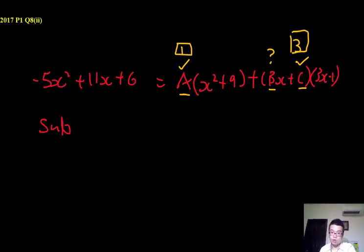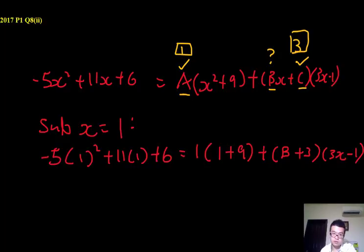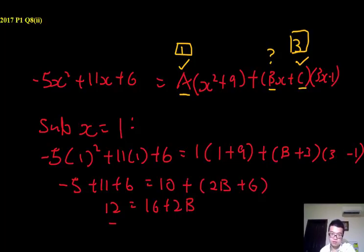Earlier we used x equals 1 over 3, and we used x equals 0. So we use this as an easy number, sub x equals 1. And then, tada, magic happens. There you have it. And simplify, minus 5 plus 11 plus 6. Oh sorry, this error. There you have it, minus 4 is equals to 2B. B is equals to negative 2, and that's your answer.